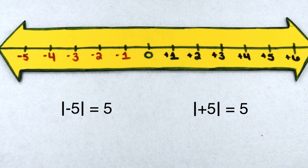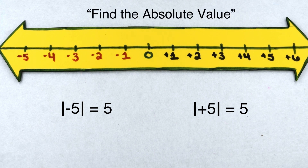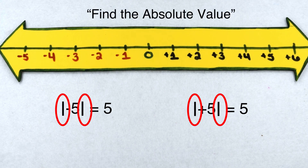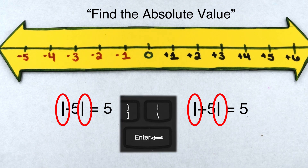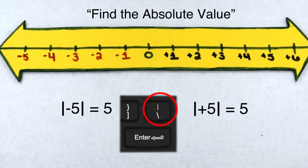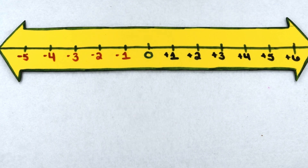To symbolize the words 'find the absolute value,' we put bars on either side of your number. On your computer, that key is usually located on the far right side of your keyboard with the backslash. Instead of writing out the words, we can simply put the bars on either side of the number and it would have the same meaning.